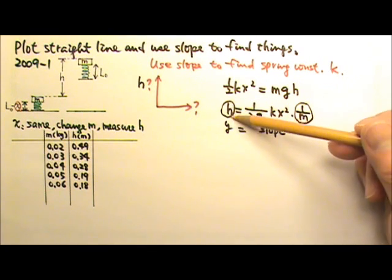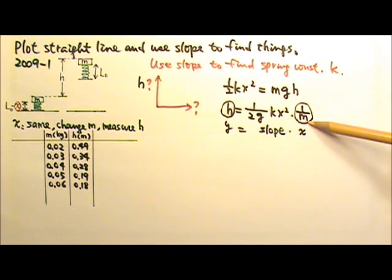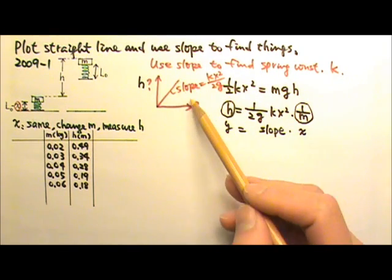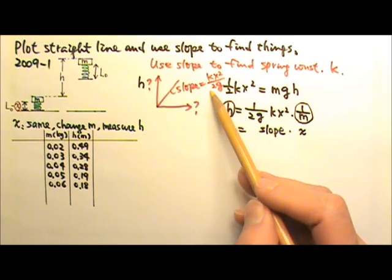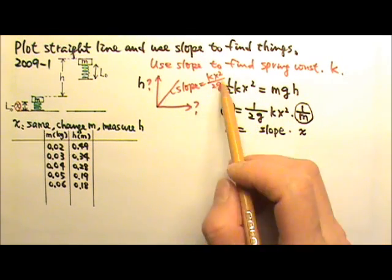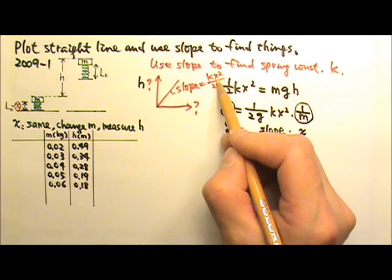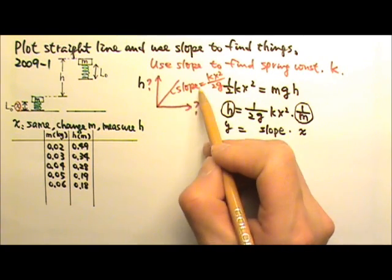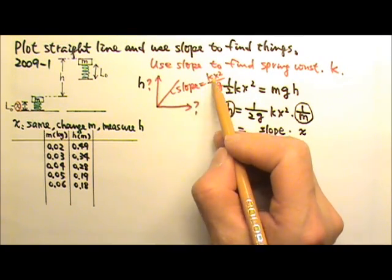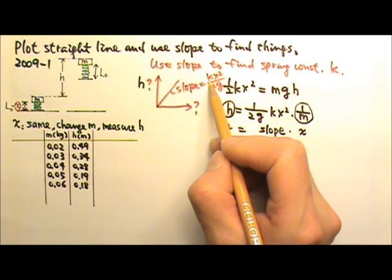Then if I use this as my vertical axis, this is my horizontal axis, then this will be the slope. So if I plot this straight line, the slope will be this value right here. And because we know g, and we know by how much we compress the spring, that means if we can find the slope from the graph, we will be able to find k, the spring constant.